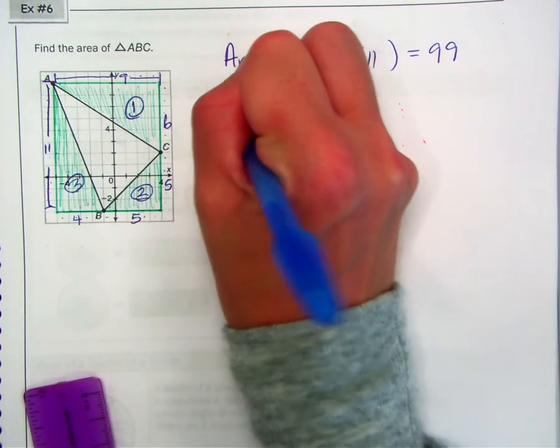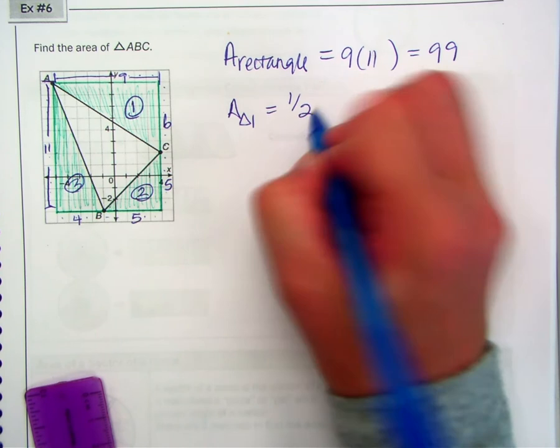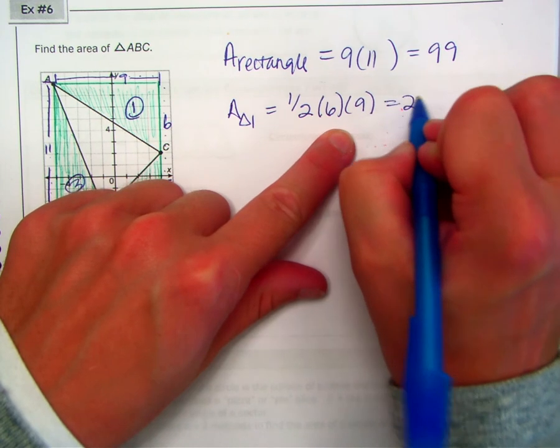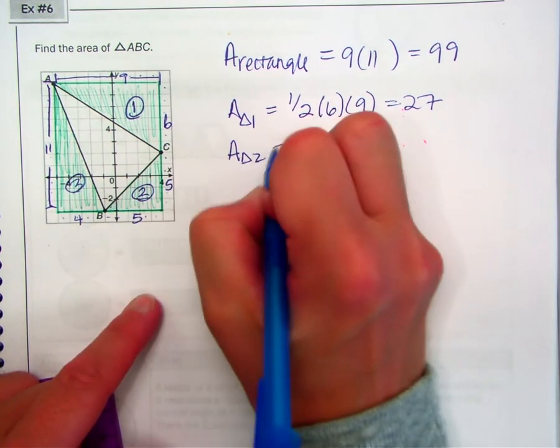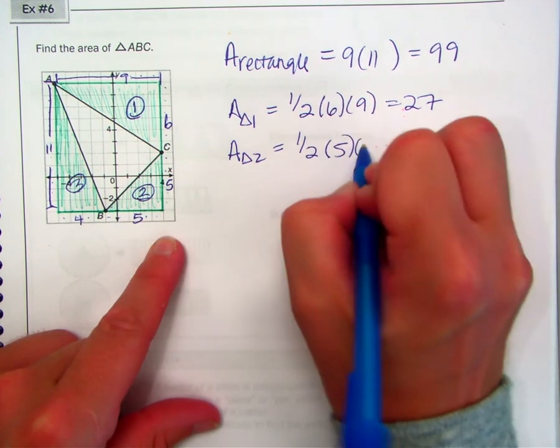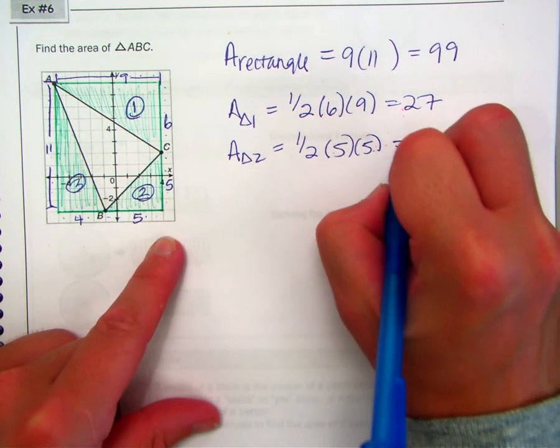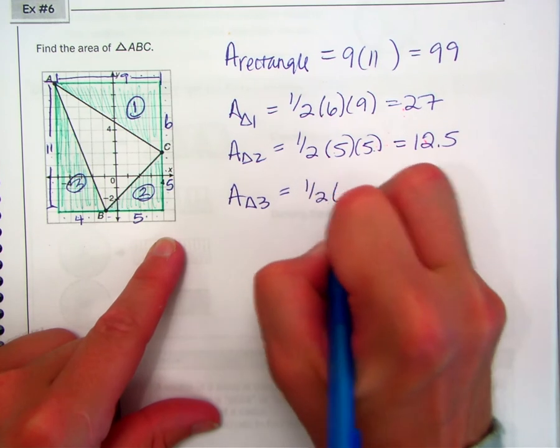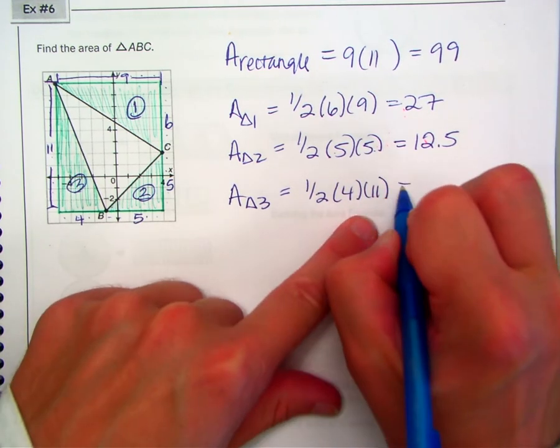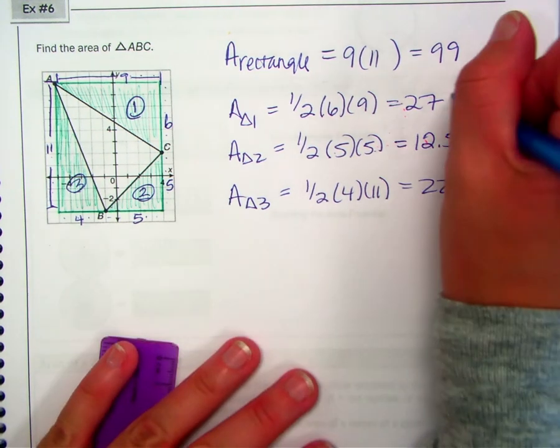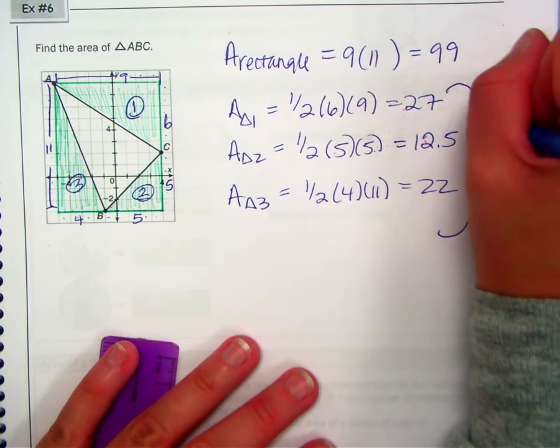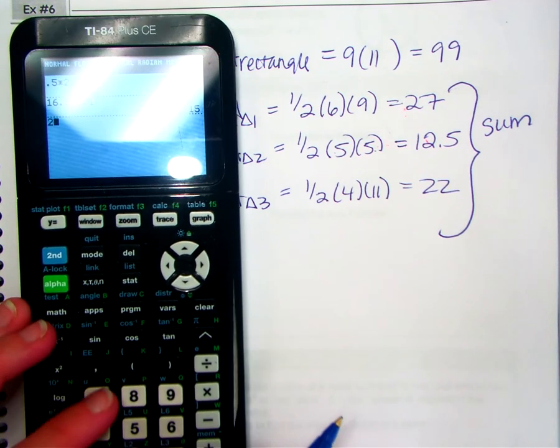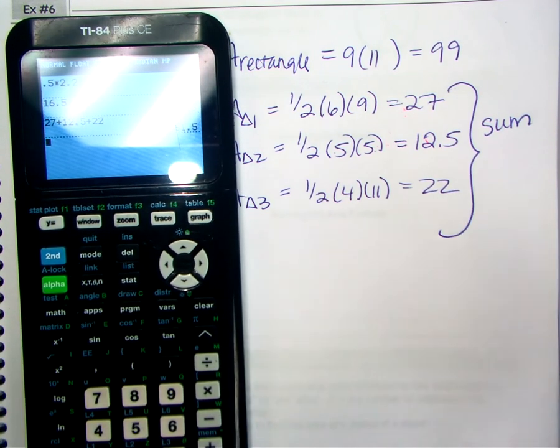So the area of triangle 1 is one-half of base times height. So one-half of 6 by 9, half of 6 is 3. 3 times 9, 27. Area of triangle 2 is one-half of 5 by 5. Well, 5 by 5 is 25. Half of 25 is 12 and a half. And then area of triangle 3 is one-half of 4 by 11. So 2 times 11, 22. Now all triangles, so the sum of the areas, 27 plus 12 and a half plus 22 is 61 and a half.